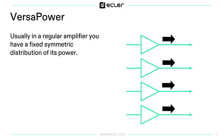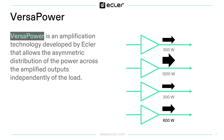In regular amplifiers, you have symmetric distribution of each power. For example, a 4-channel amplifier with 600W per channel gives a total of 2400W. In VIDA, we have VersaPower, which allows asymmetric distribution of the amplifier's power.